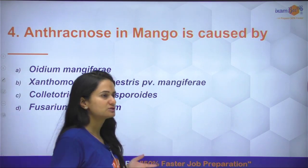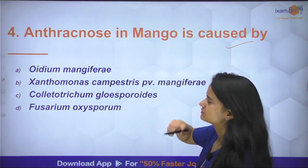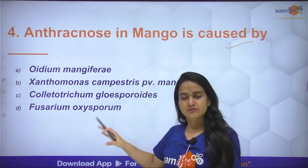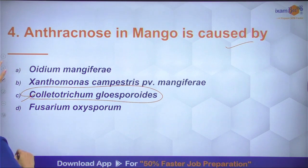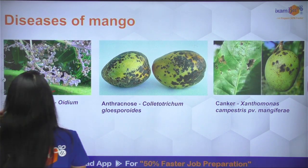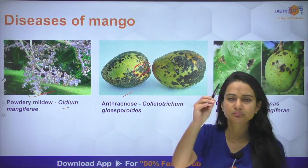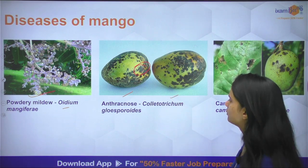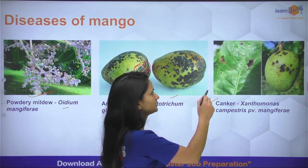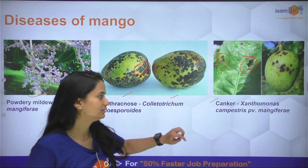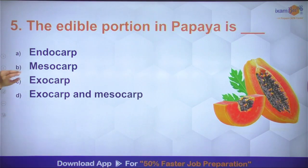Question number 4: anthracnose in mango is caused by — यह एक fungal disease है। इसका causal agent है Colletotrichum gloeosporioides। Mango की other important diseases: powdery mildew जो Oidium mangiferae से होती है, जिसमें black spots पड़ने लगते हैं fruit और leaves पर। तीसरा important है canker, जिसमें angular spots पड़ते हैं — यह Xanthomonas campestris bacteria से होता है।